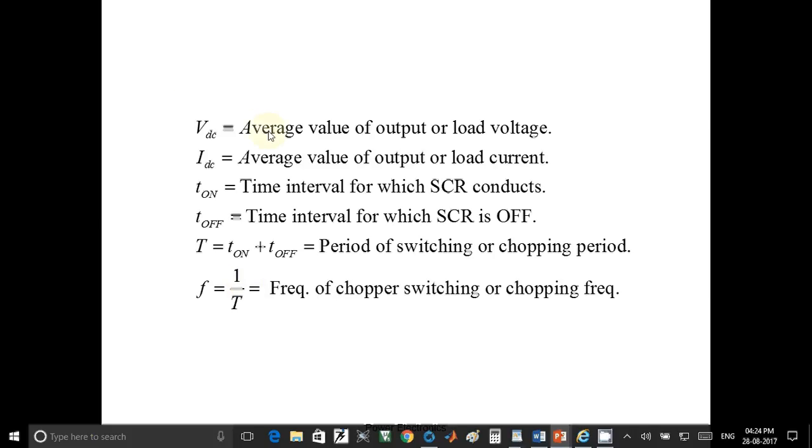Vdc is average value of output or load voltage. Idc is average value of output or load current. T on is on time of switch. T off is off time of switch. Total time T is given by T on plus T off, called as period of switching.